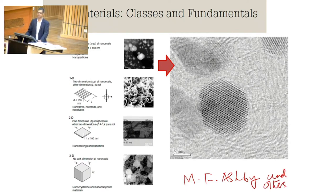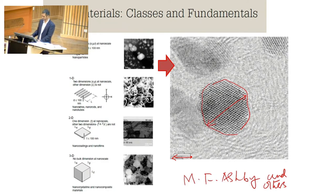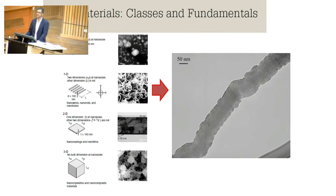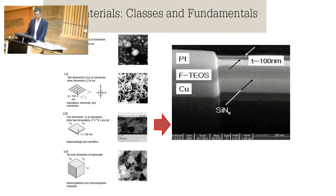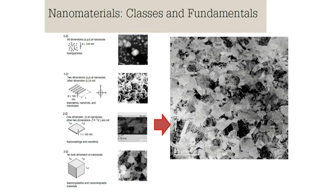Here you can see a gold nanoparticle with dimension less than 100 nanometers — specifically 2 nanometers. You must be able to read the linear scale, measure the dimensions of the particle. You can also see a 1D nanorod — bent, but still 1D — where one dimension is long and the other two are in the nanometric scale. A thin film example has already been shown. Grain structures represent 3D nanomaterials.